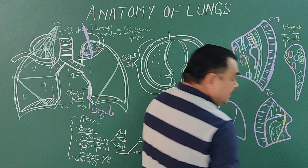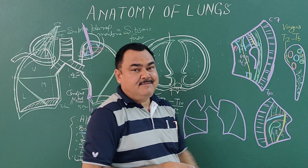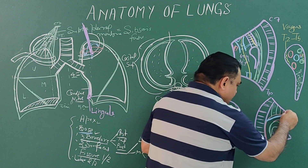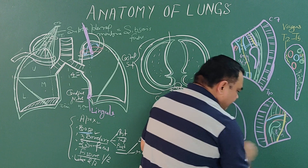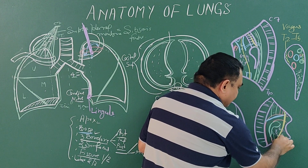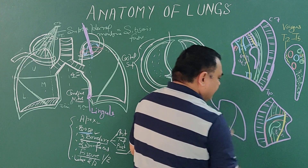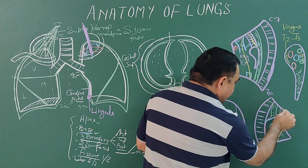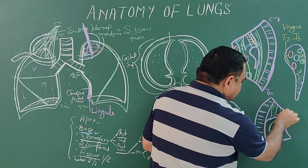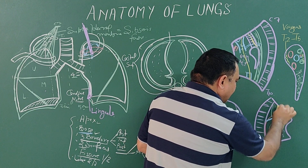Here lies the cardiac impression — that is the impression of the left ventricle on the left side. This is the left ventricle impression. And the left vagus nerve lies here, and here the left recurrent laryngeal nerve.